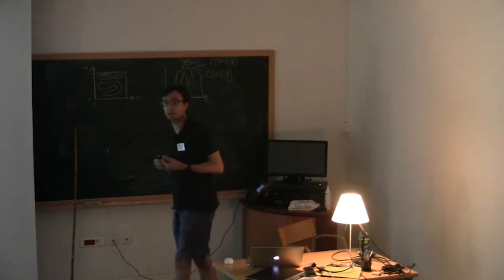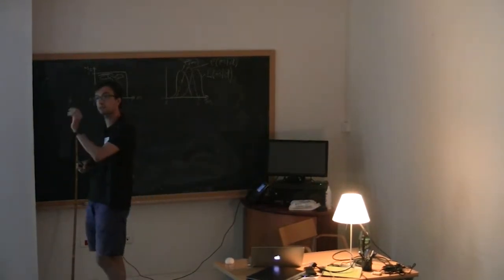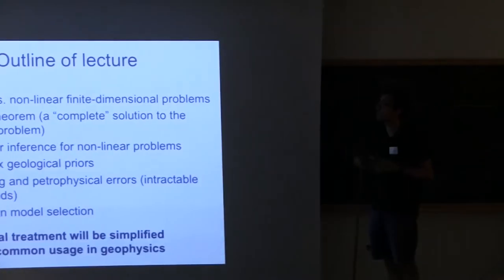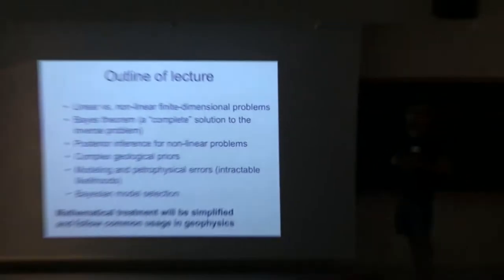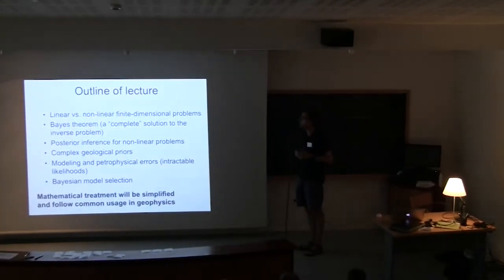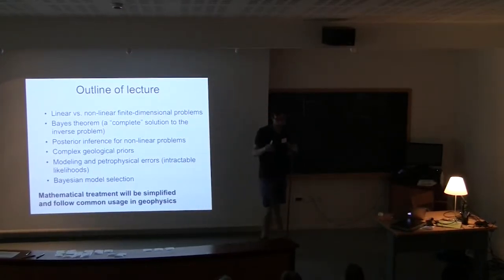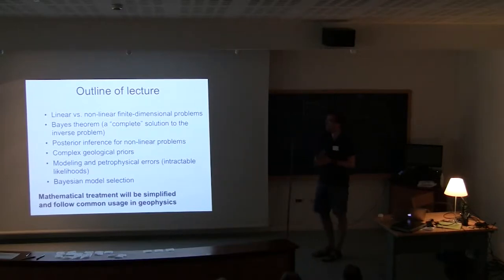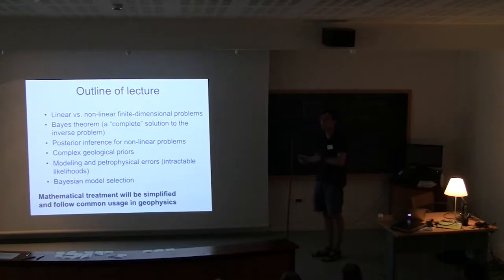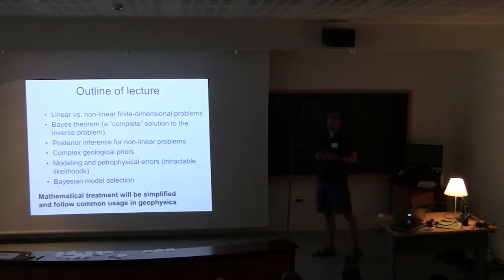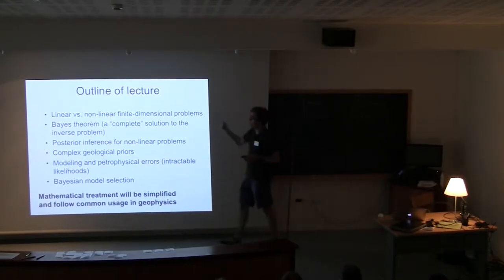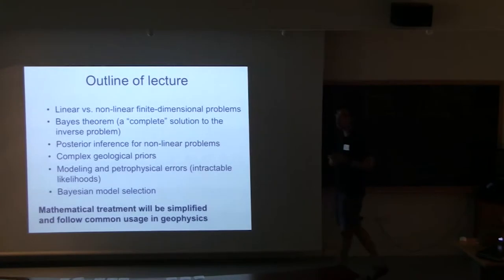You're going to do this in a probabilistic framework, so you're not going to say this is the true value. Instead, you'll have a distribution of possible values, and this will be multivariate distributions because we're working in higher dimensions. We're going to limit ourselves to finite dimensional problems, with a fixed number of unknowns — 1, 100, or 1000 — though more general cases exist for transdimensional inversion, which we will not treat here.